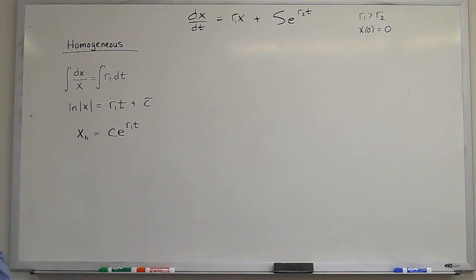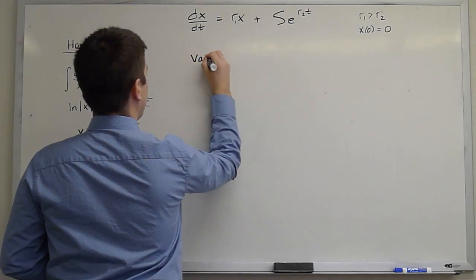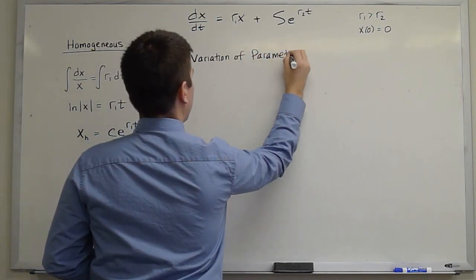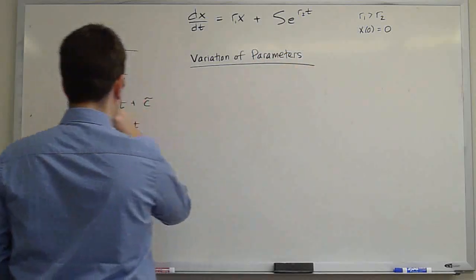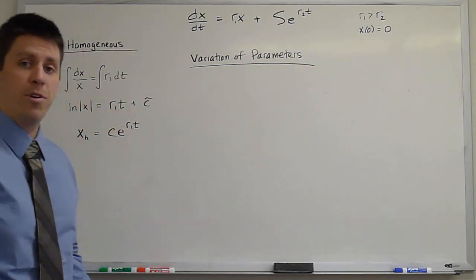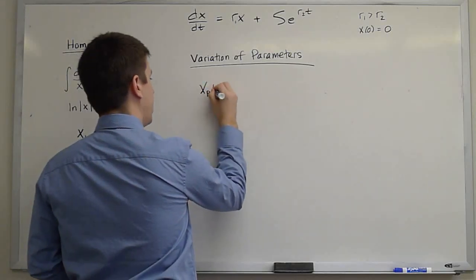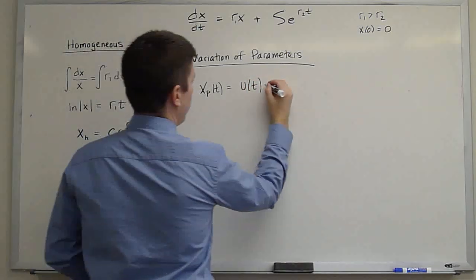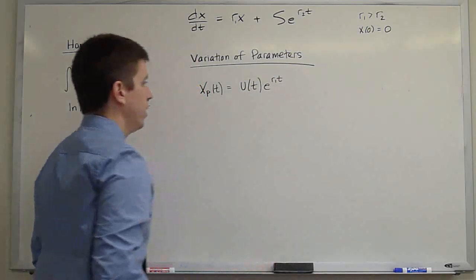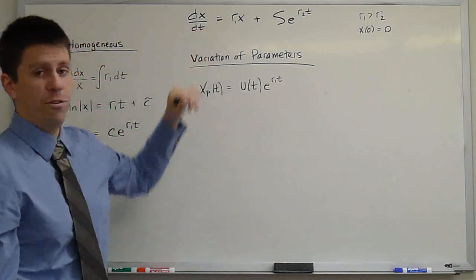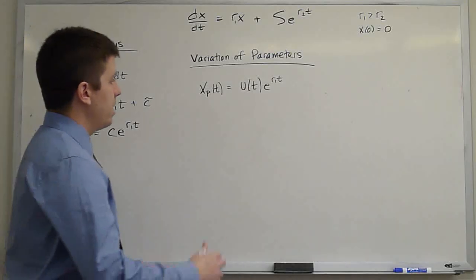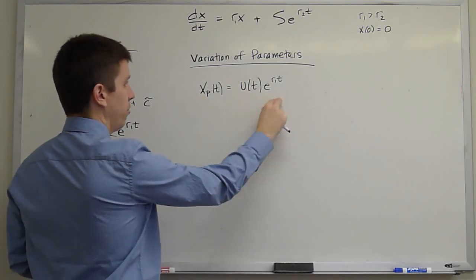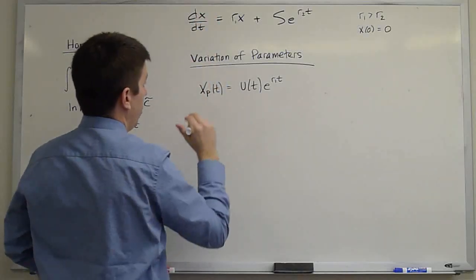Now let's apply variation of parameters. So the assumption of variation of parameters is that we look for a particular solution. Let x_p(t) be an unknown function u(t) times the homogeneous solution, e^(r1*t). So this is a guess which we're going to insert into the governing ordinary differential equation. It might also be known as a change of variables because instead of solving for x, we will end up having to solve for u.